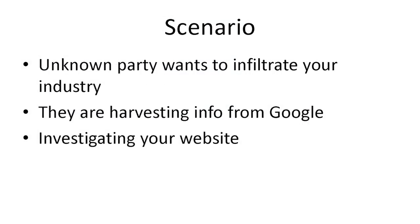Here's a scenario: you're a company and there's a group that wants to infiltrate your industry or your specific company. The first thing they're going to do is Google about you, see what kind of information was cached on the web. They'll investigate your website and see what information they can get that they shouldn't. What would you do if you were the bad guy? What would be the first quick thing you would do on someone's website to find stuff you shouldn't?